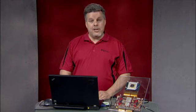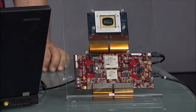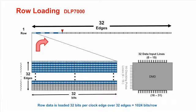DMDs are loaded one row at a time. This means that 1024 bits of binary data must be sent to the DMD in order to load the memory in one row. For the DLP 7000 XGA DMD, there are 32 parallel data input lines. In order to send the 1024 bits of data used to load the row, we must send 32 bits of data per data clock edge over 32 clock edges, making 16 full data clock cycles necessary to clock in one row's worth of data.